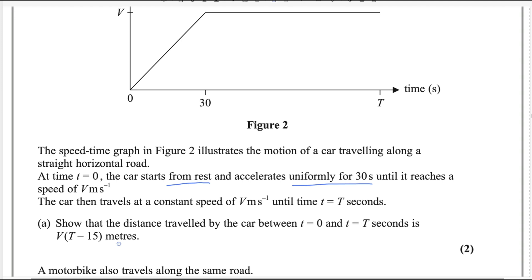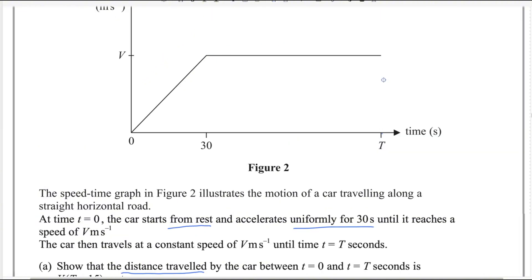For the first part, in a speed-time graph, if you want to find the distance traveled, we use the area under the graph. This shape is a trapezium from this diagram. We can consider the length from here to here — that will be t minus 30. Let's call this 'a'. We know that the area of a trapezium is (a plus b) divided by 2, multiplied by the height. Here, a and b are the parallel sides.